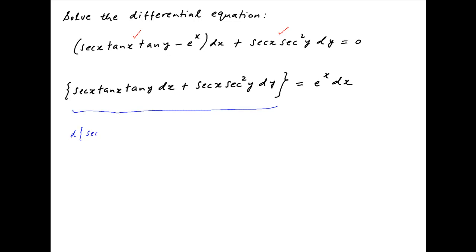Now, notice that the derivative of sec x times tan y is equal to tan y times the derivative of sec x, which is sec x times tan x times dx plus sec x times the derivative of tan y, which is sec square y dy.